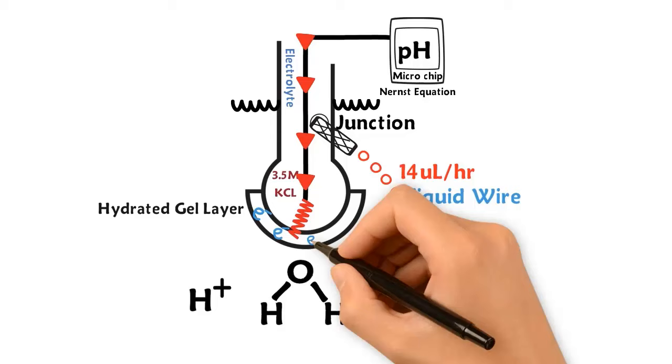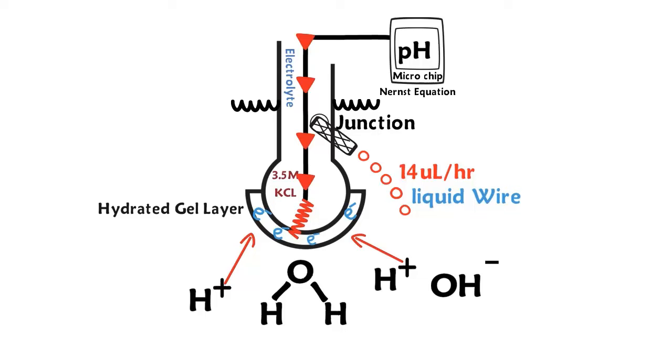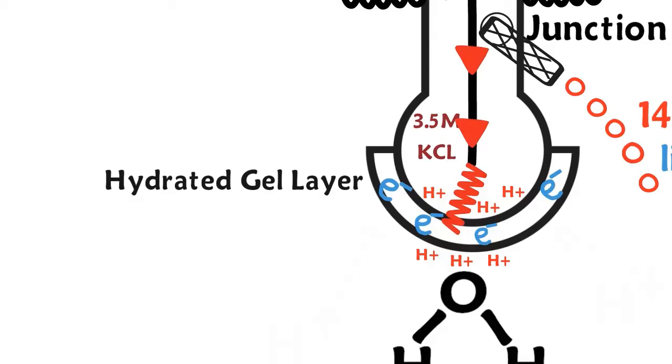The hydrogen ions in your solution will migrate toward and attach themselves to the hydrated gel layer. The number of hydrogen ions inside the glass bulb versus the number of hydrogen ions attached to the gel layer will ultimately decide your solution's pH value. This is dependent on the millivolt charge transmitted through the hydrogen ions from your solution.